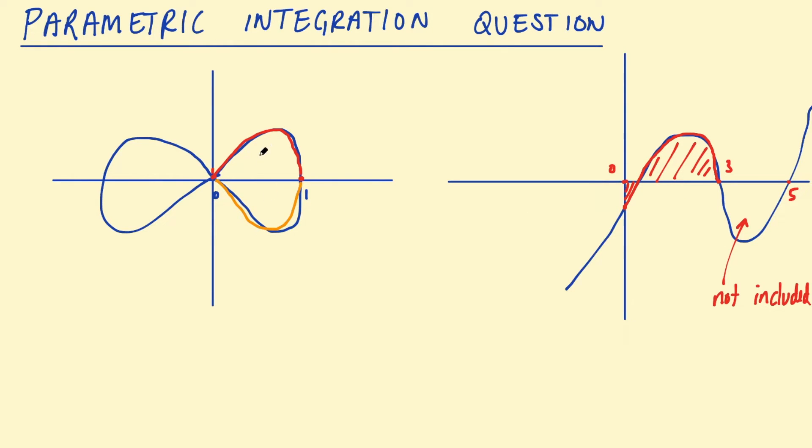So you're either finding the area above the curve or below the curve. Just in the same way as when you integrate a regular function you're not including the area under any other part of the curve. Similarly with the parametric curve if you integrate from 0 to 1, you're only doing part of that curve.